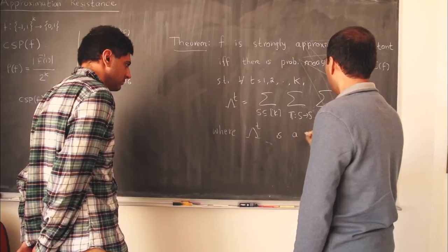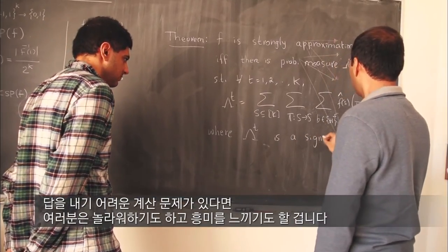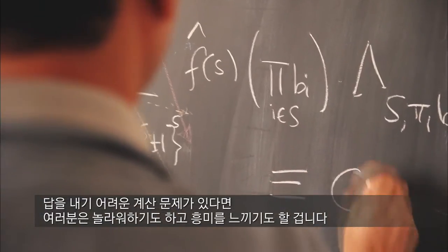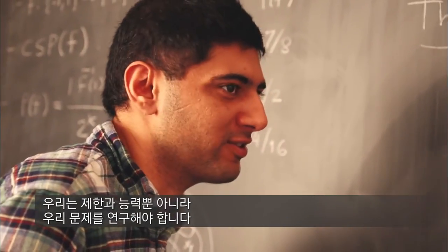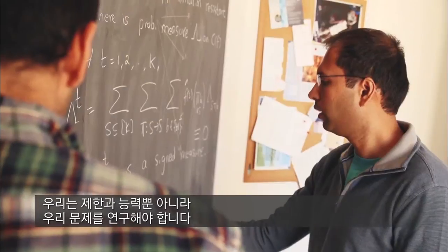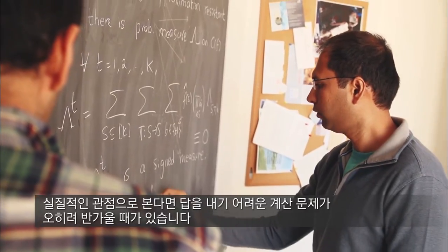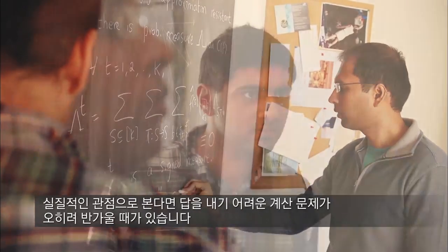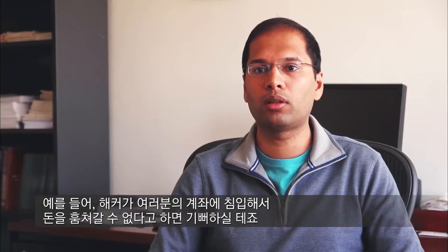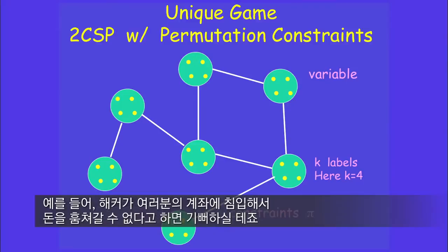It might come as a surprise to you that we are so interested in knowing that certain computational problems cannot be solved — in particular, cannot be solved fast. We ought to investigate both the power as well as the limitations of our methods. From a practical point of view, it's often useful that certain computational tasks cannot be performed. For example, I'm sure you would be happy to know that a hacker cannot break into your bank account and steal all your money.